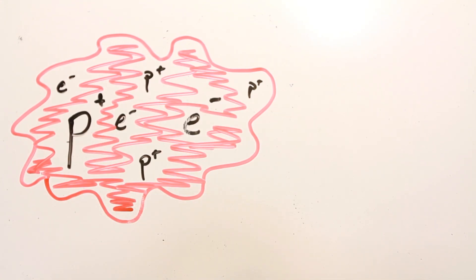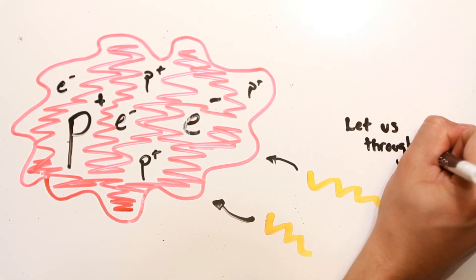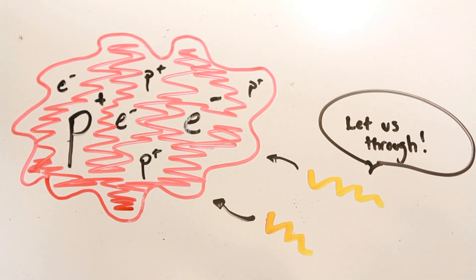In other words, the other component in the universe we talked about, photons, or light, can't pass through it. Instead, the light gets tripped up by the plasma and doesn't travel very far at all.